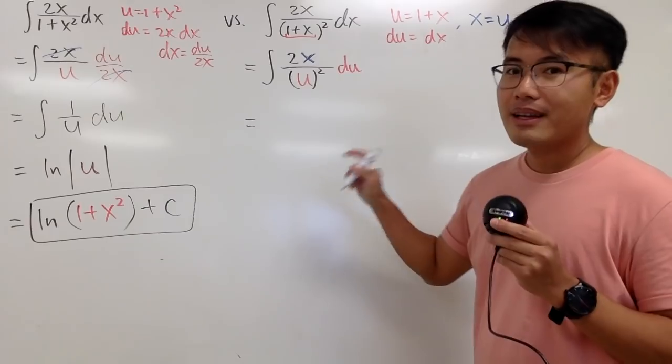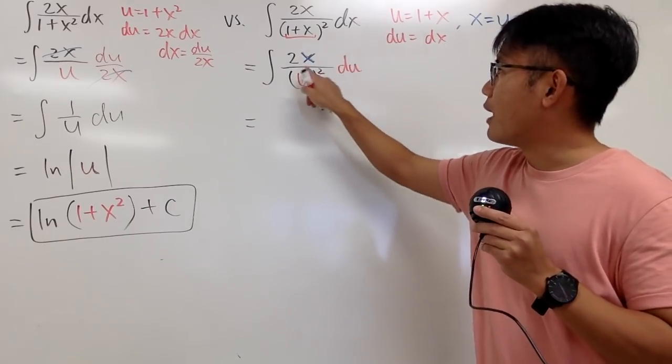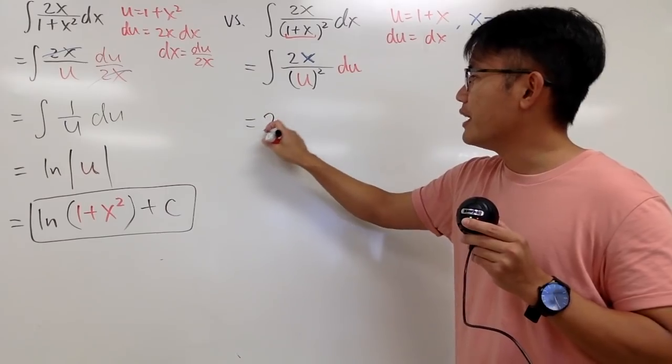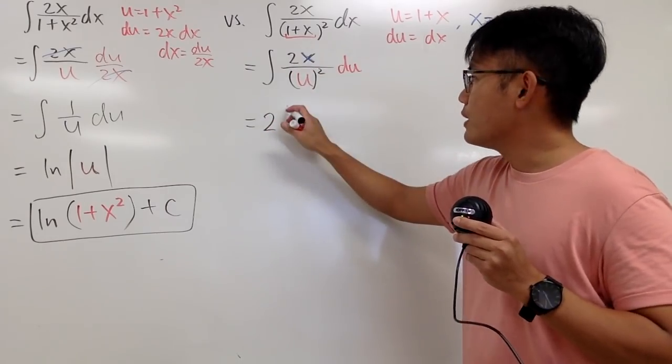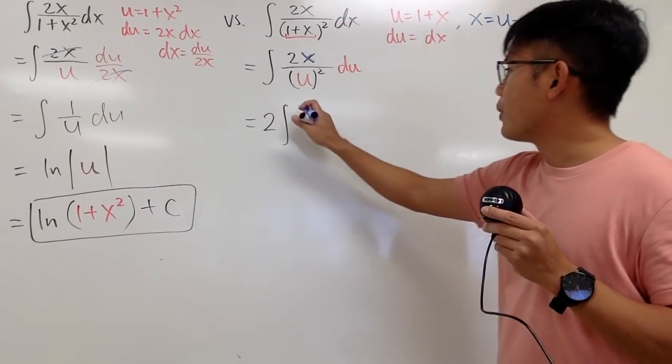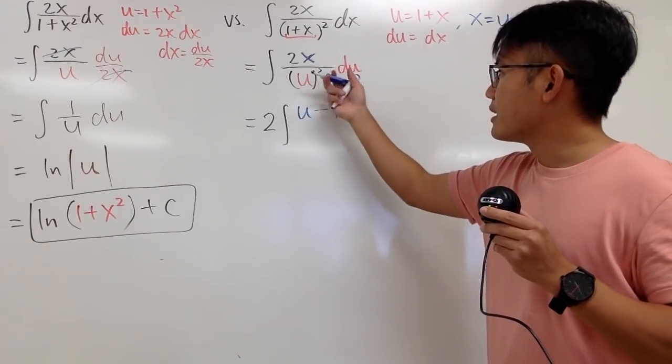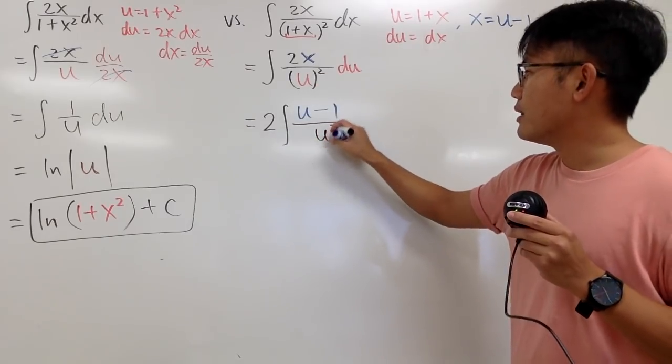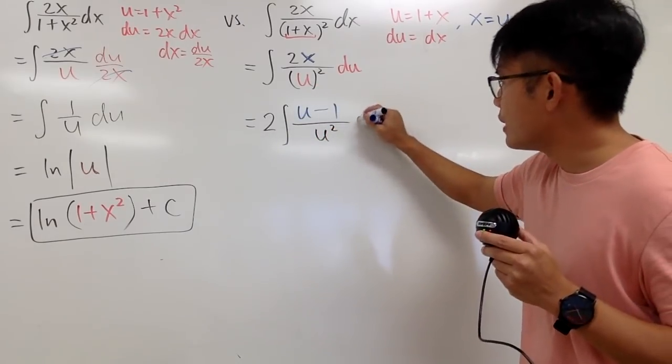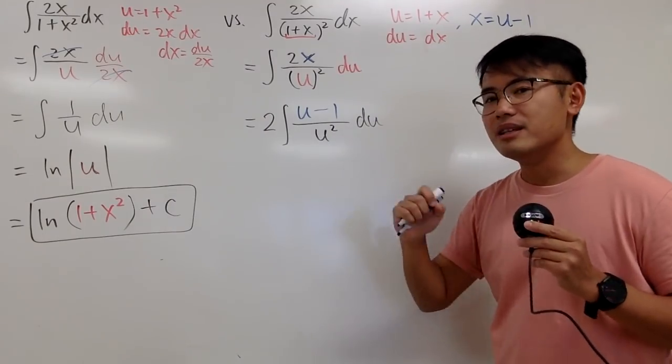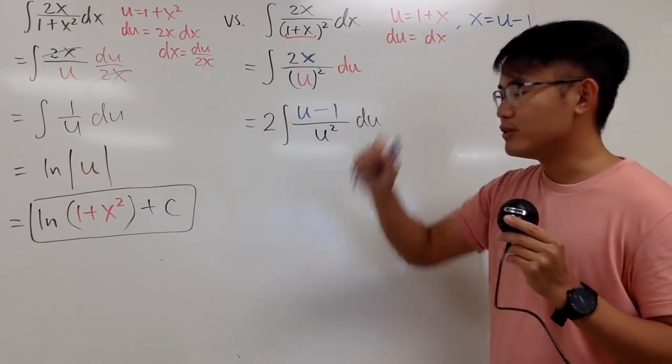Okay, let me continue. Notice we have 2 times this part. And this is just a constant multiple. I'm going to bring that to the front of the integration. And then we'll focus on the integral. And dx is the u minus 1. And then on the denominator, we have u squared, like this. And of course, we still have the du. And now this integral is completely in the u world. And we will finish this right here.